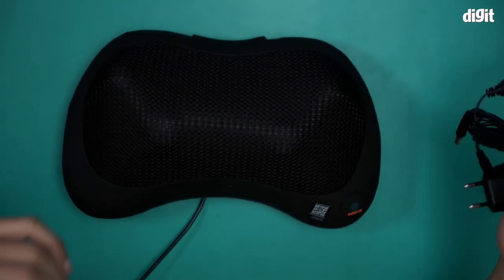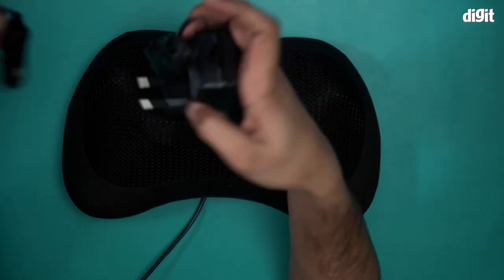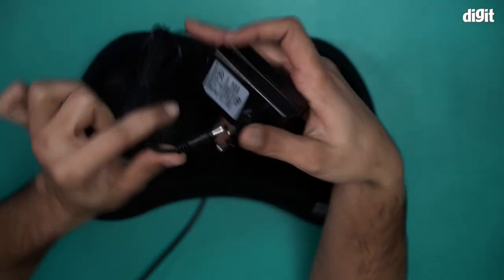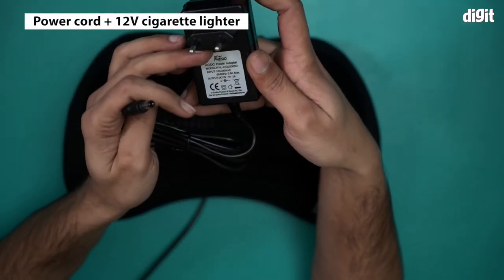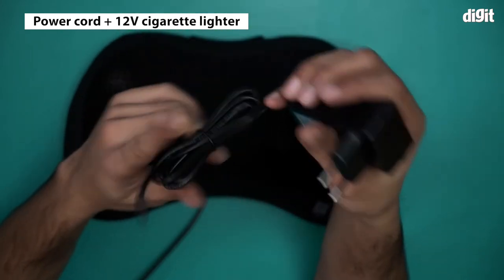Next we have the power cable. There are two wires to it. So this is the primary power cable. This part will go to a power socket and this is the part that will go inside the massage pillow.